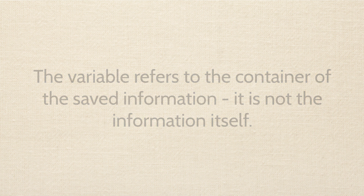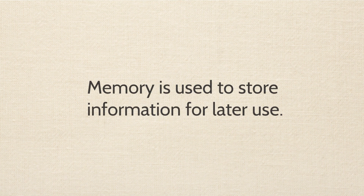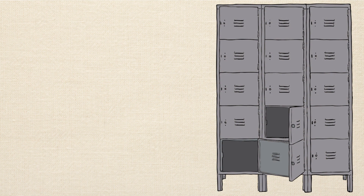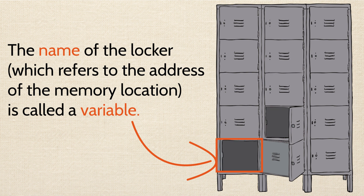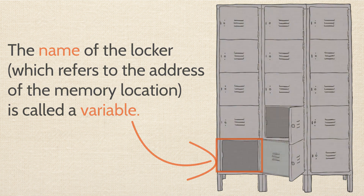So let's recap: we need to store information, and we use memory to store it. We can think of memory like a wall of lockers. To use one of these lockers, we have to name it, and the name of the locker is called a variable. Once we have it named, we can put stuff in it and refer back to that stuff at a later time whenever we need it. The name refers to the location of the locker, not the actual content of the locker.